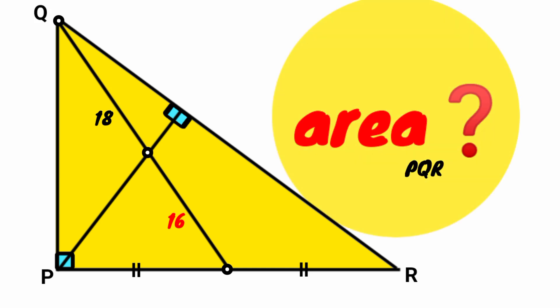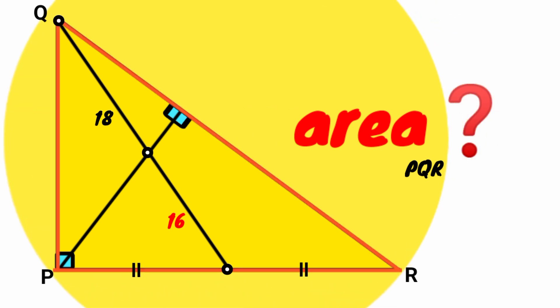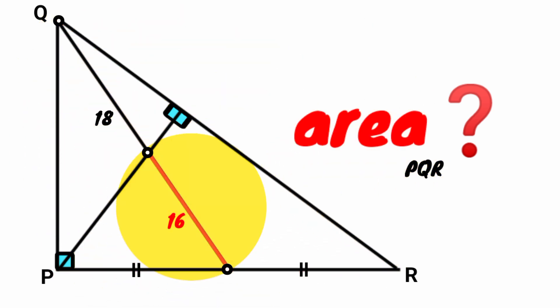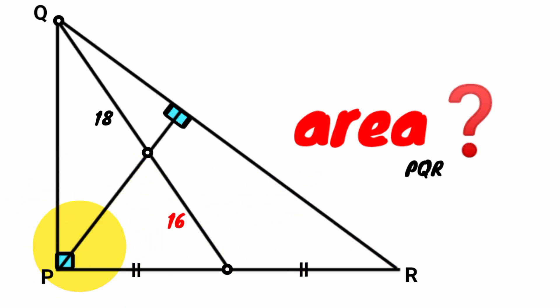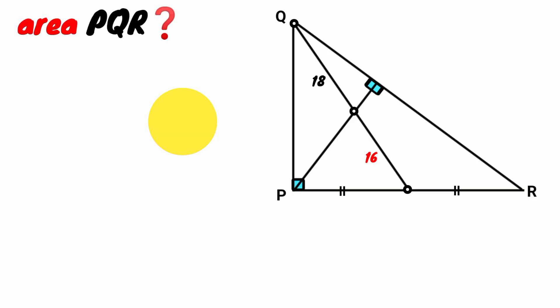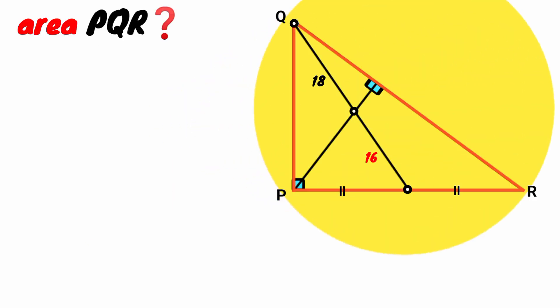Hi friends, welcome back to another interesting question. We are to calculate the area of triangle PQR. We have the length of this line segment to be 16 units, and that of this one is 18 units. Here we see these segments are congruent. We have here a right angle, and this is also a right angle. So how can we calculate the area of this triangle PQR?